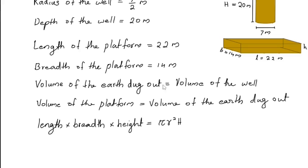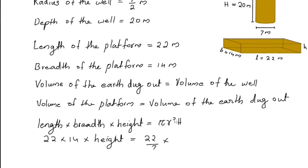Length of the platform is 22 meter and the breadth is 14 meter. So 22 into 14 into height is equal to pi, which is 22 by 7, into radius of the well, which is 7 by 2, squared, into height of the well, which is 20 meter. Now cancel the 7s. 22 by 22 gives 1, and 2 by 20 gives 10.